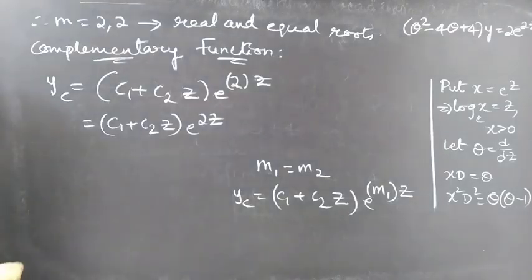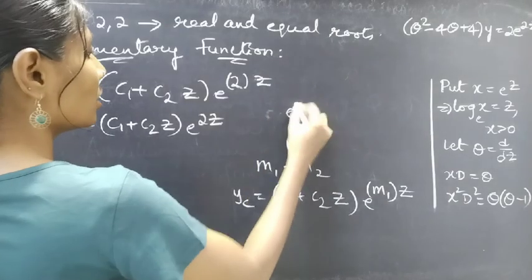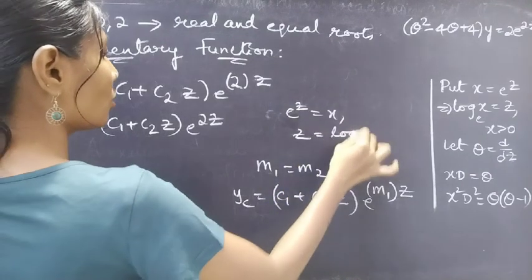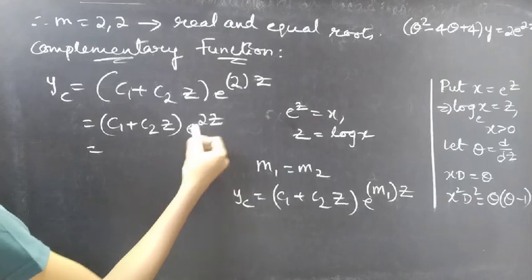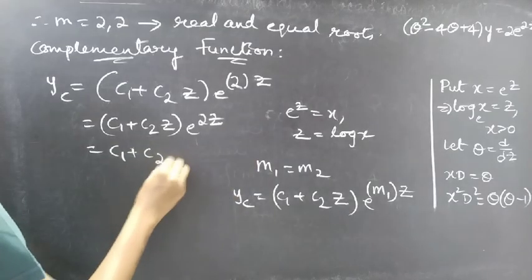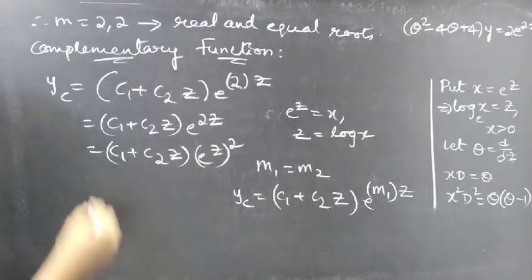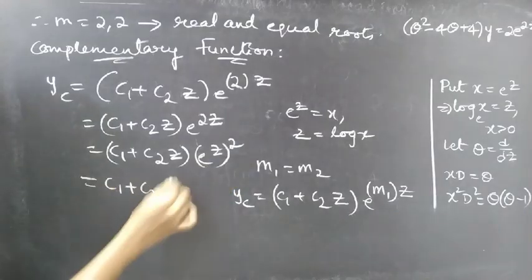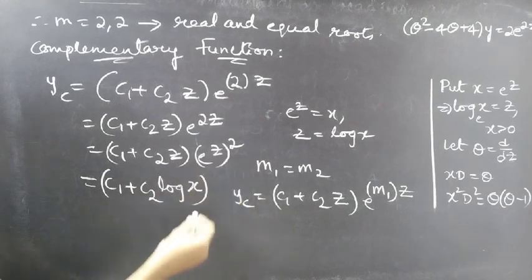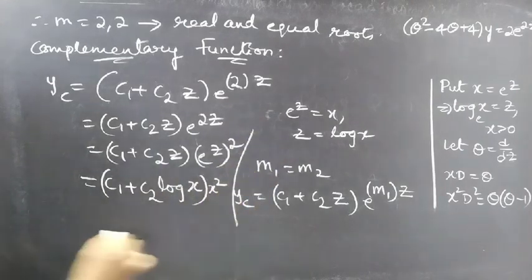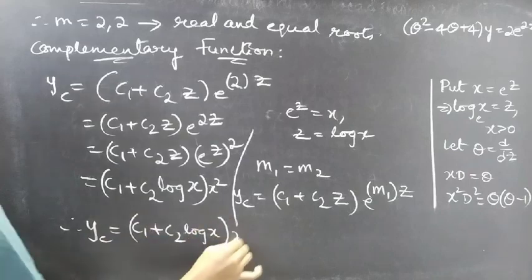We have yc in terms of z; we need to write it in terms of x. By replacing e^z by x and z by log x, we write e^(2z) as (e^z)². Replacing z by log x and e^z by x, we get yc equals (c1 + c2·log x)·x².